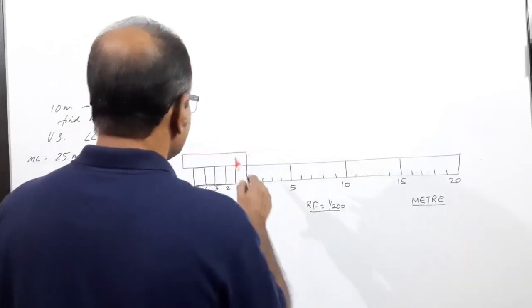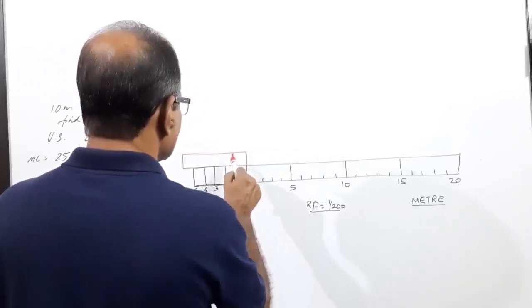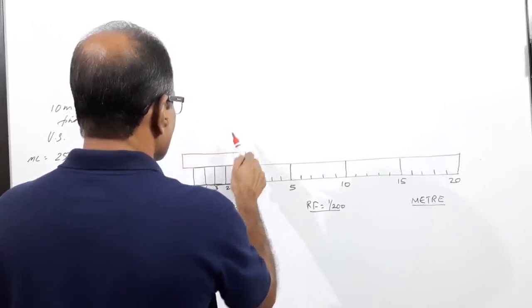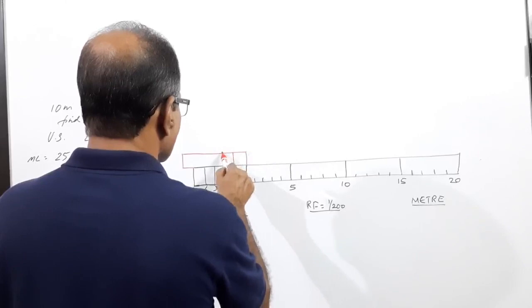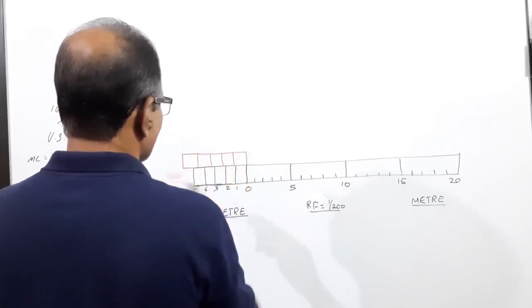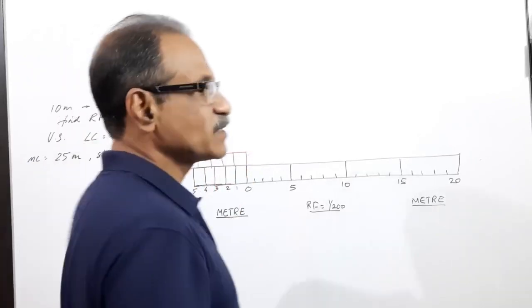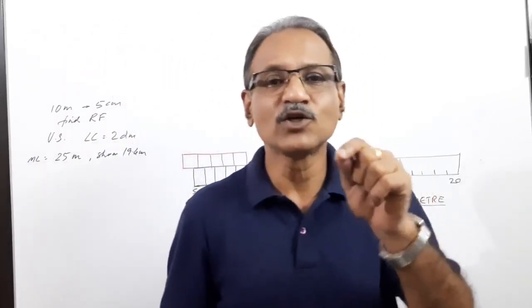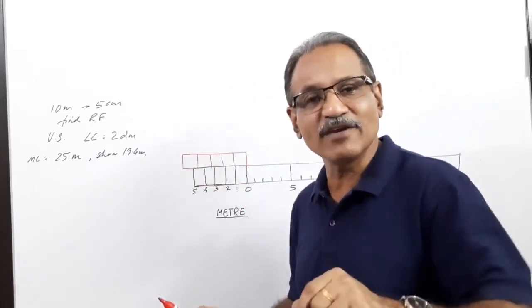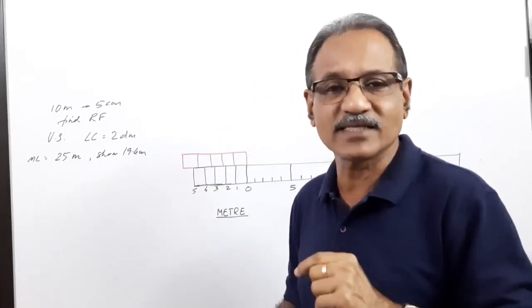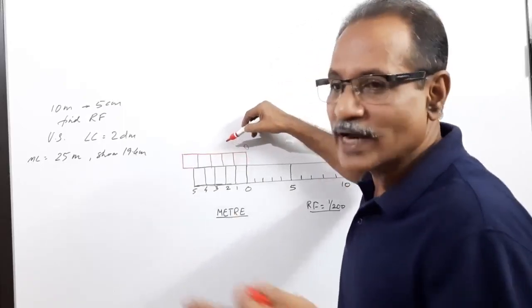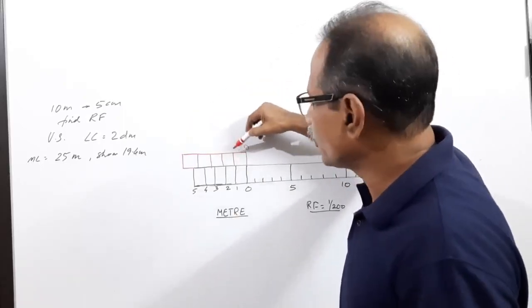Each division represents 1.2 meters. Six meters divided into five equal parts gives 1.2 meters each. You can write zero, and if you want to write the unit in meters, write 1.2, 2.4, 3.6, 4.8, and 6.